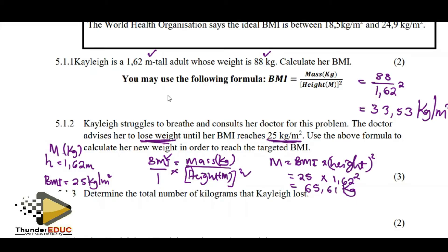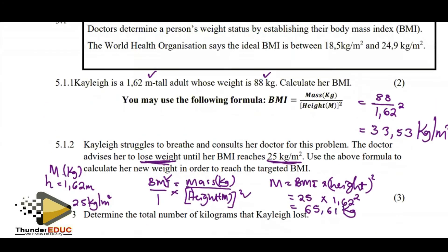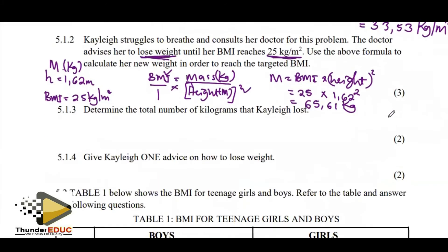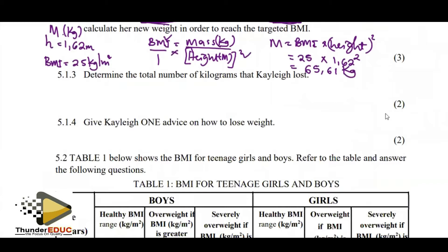They are telling us to determine the total number of kilograms K lost. Initially the first weight was 88 kg. Now K has the new weight. So we need to know how much the person lost: 88 minus 65.61. The person lost 22.39 kilograms.